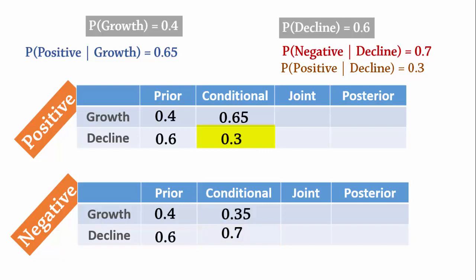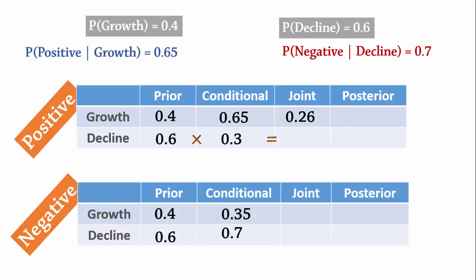The joint probabilities are computed by multiplying the prior and conditional probabilities. Therefore, for positive and growth, the joint probability is 0.4 times 0.65, which equals 0.26. For positive and decline, it is 0.18. For negative and growth, it is 0.14. And for negative and decline, it is 0.42.